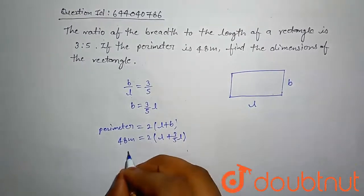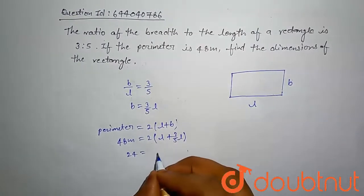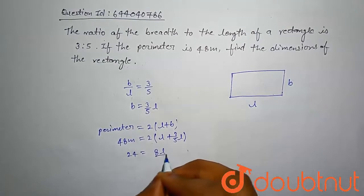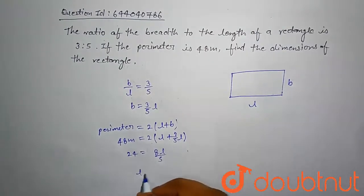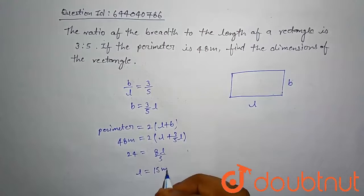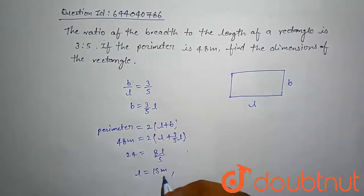And perimeter of this structure is given 48 meters. Then this is 24 equal to 8 l by 5, then our l is 15 meters.